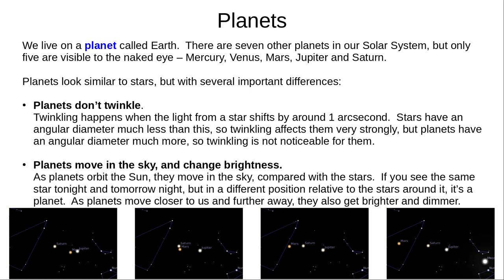Two: planets move in the sky compared with the stars behind them. Here we can see Mars, Jupiter and Saturn move over just four days. They also get brighter and dimmer as they move closer and further away from Earth. An object in almost the same position, but not quite, today and tomorrow, must be a planet.